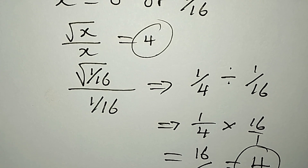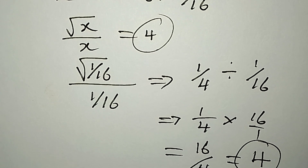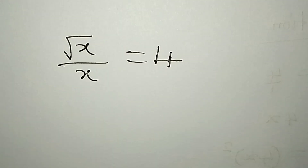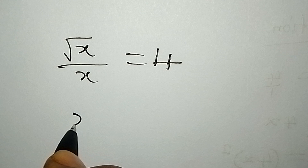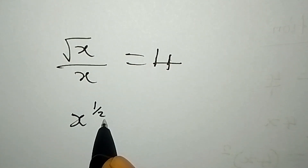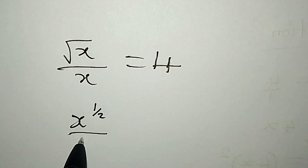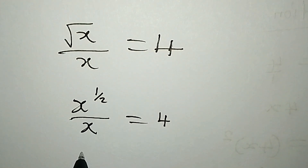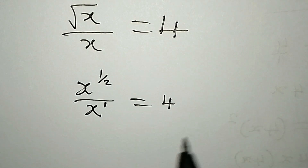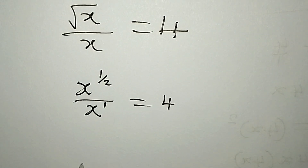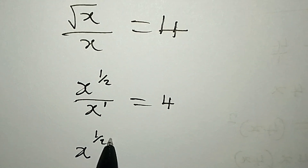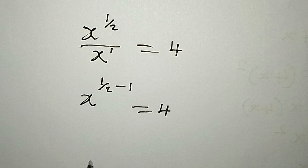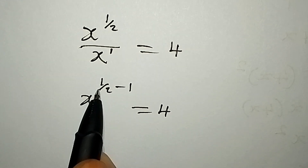We got 4, which matches the right hand side of the equation, so this confirms our answer. Now let's do this in another way — you'll see how easy it will be. We rewrite x to the power of 1/2 over x equals 4. According to the laws of indices, I'm going to subtract powers, and this x has power 1, so we get x to the power of 1/2 minus 1 equals 4.